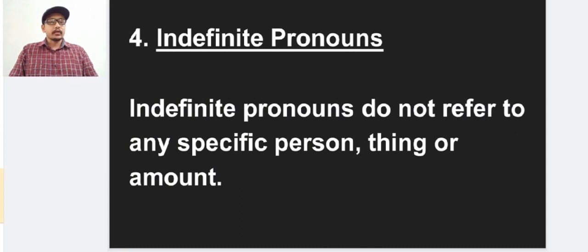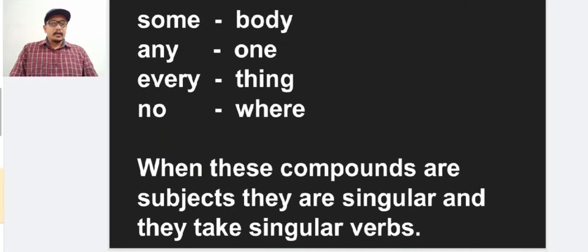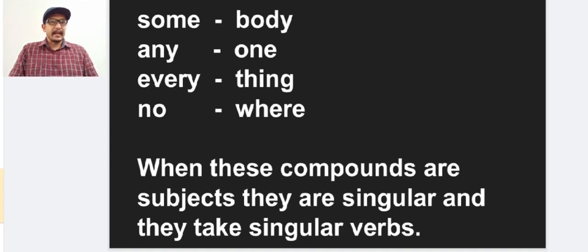Let us come to the fourth one, indefinite pronouns. Indefinite pronouns do not refer to any specific person, thing, or amount. It is not referring to a specific person — it talks generally and is not definite. Here one tip: using the words some, any, every, no combined with body, one, thing, where, we can make 18 indefinite pronouns.